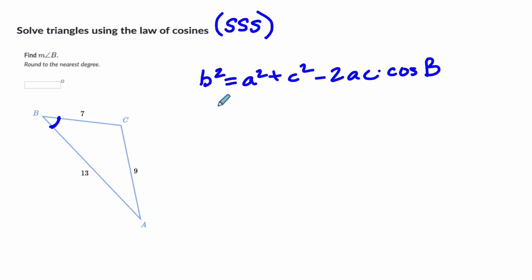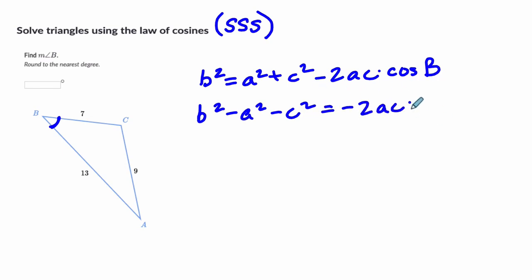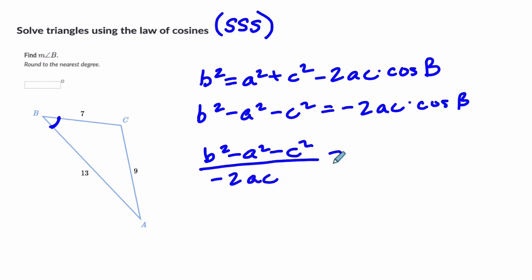Let me show you the algebraic derivation. We want to isolate the cosine of B and eventually angle B. Subtracting A squared and C squared gives B squared minus A squared minus C squared equals negative 2AC times the cosine of B. Dividing both sides by negative 2AC gives cosine of B equals that whole expression. Then we take the inverse cosine of both sides to isolate angle B.